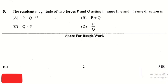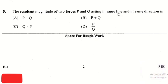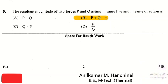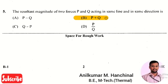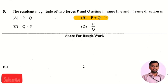The next question: the resultant magnitude of two forces P and Q acting in the same line and in the same direction is? The right answer is option 2, that is P + Q. The resultant force is the sum of two forces when they act along the same line in the same direction.